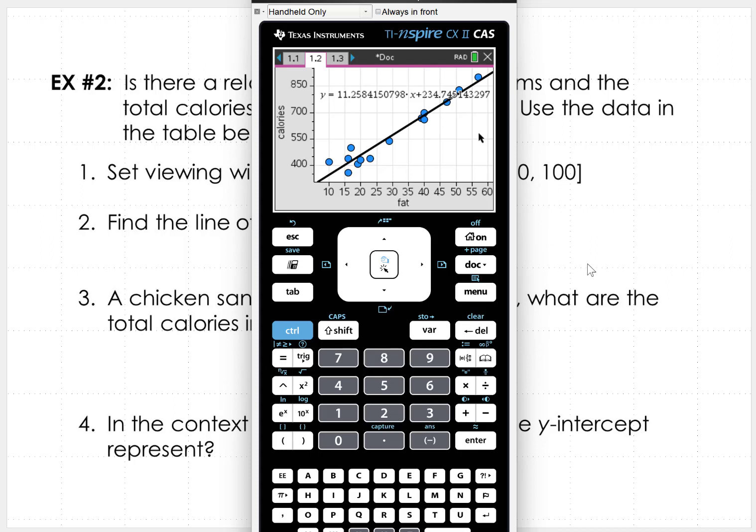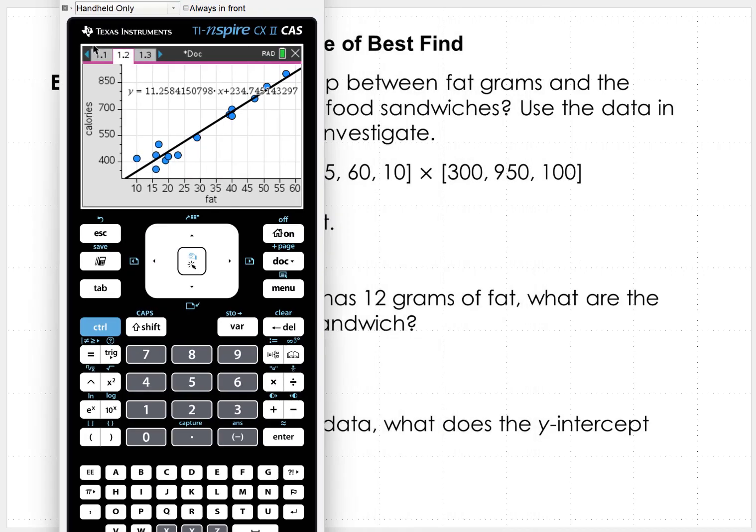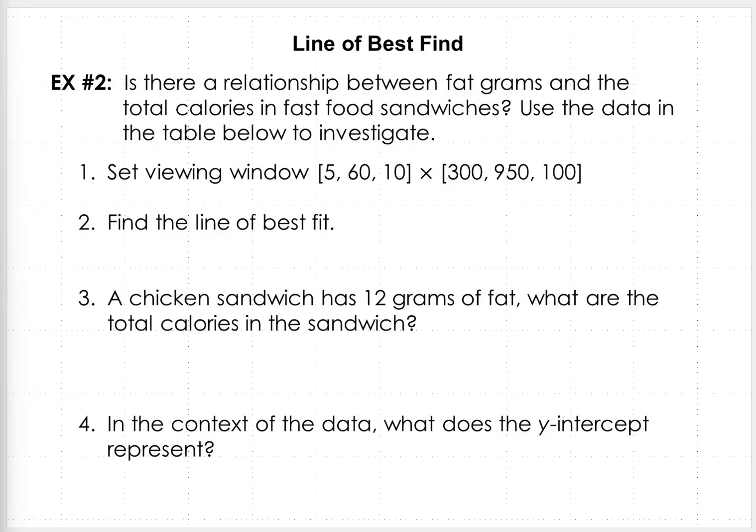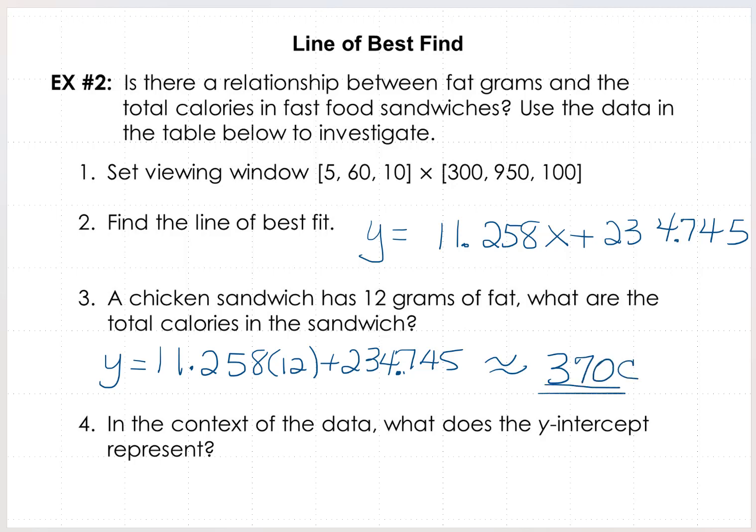So we know the line of best fit is y equals 11.258x plus 234.745. So a chicken sandwich has 12 grams of fat. What are the total calories in the sandwich? So putting in x was our fat, 11.258 times 12 plus 234.745. And we find that that is just about 370 calories in that sandwich.